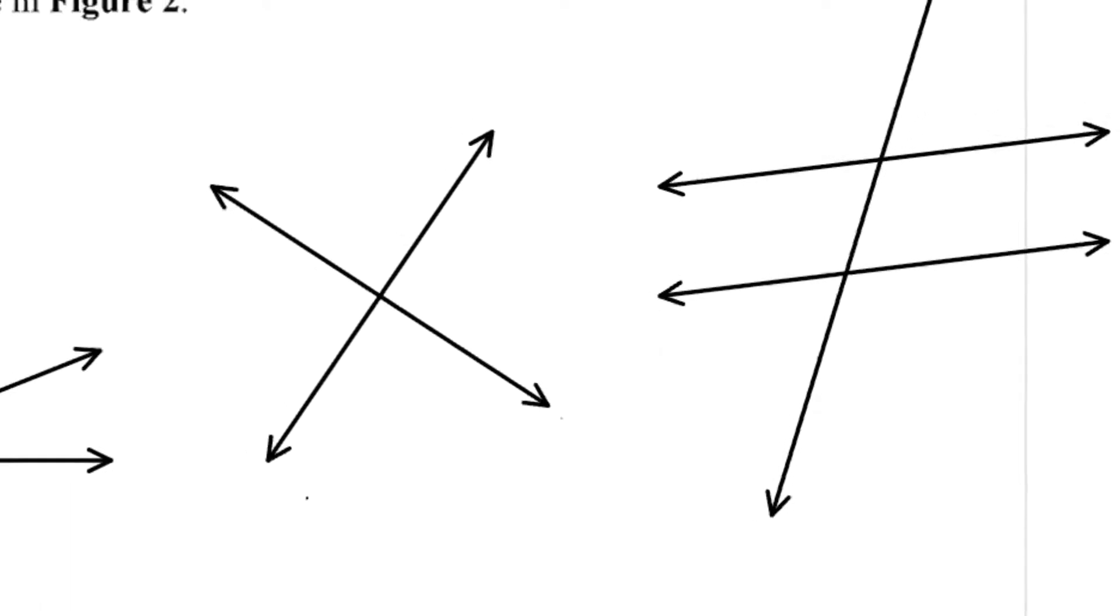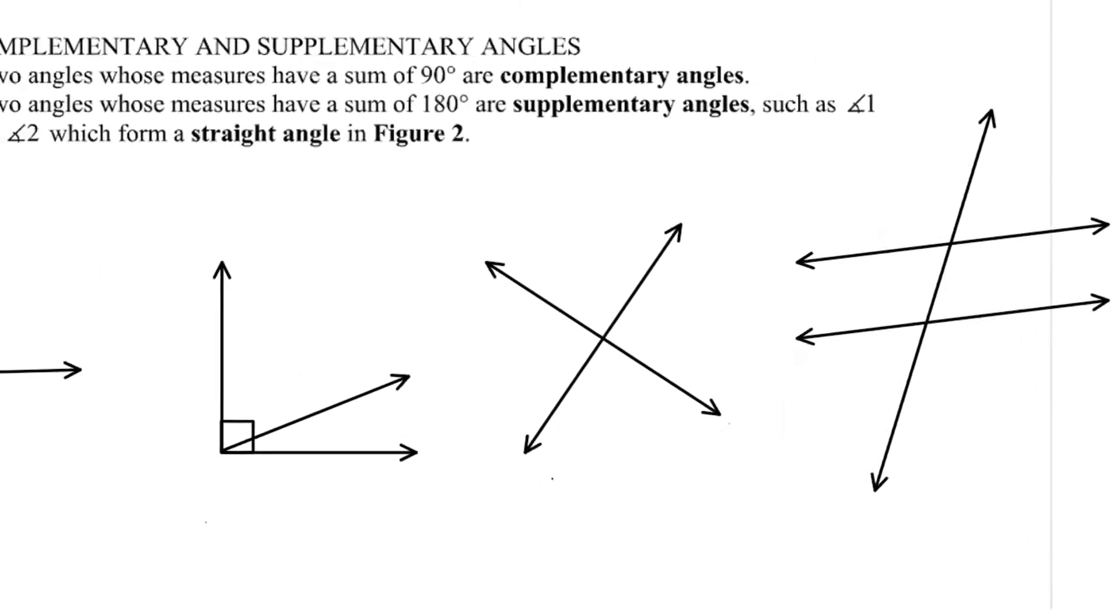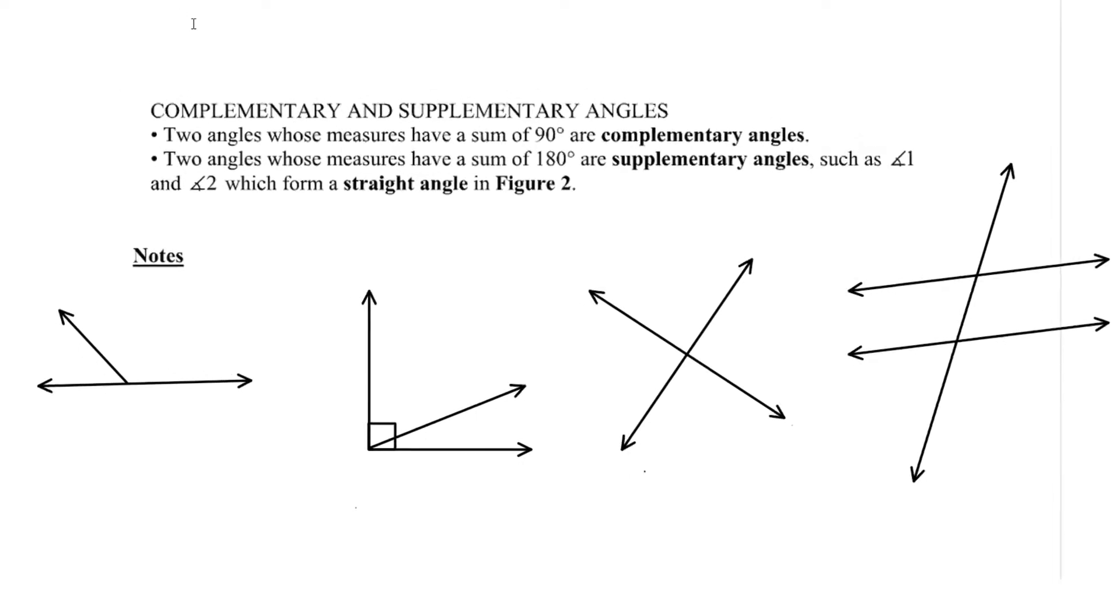So in order to work up to the point where we can solve some of these problems, I'd like to focus on what are the possible relationships when you have basically lines and rays intersecting.